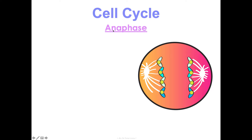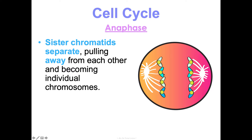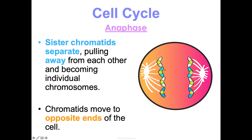Anaphase — think 'away' or 'apart.' Sister chromatids are separated; they pull away from each other and become individual chromosomes. These individual chromatids or chromosomes move to opposite ends — or poles — of the cell.